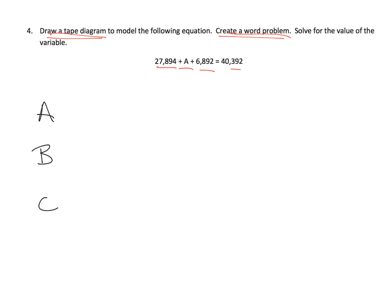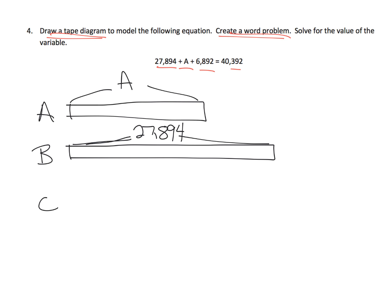So I'm going to label A, B, and C. And I'm going to say, we don't know how much is A. Oftentimes, I have always put a question mark here, but I'm going to use the letter A this time. And then I'm going to say B. Let's make B really long right here. And B is the 27,894 pounds. And C is the 6,892. And then the total right here is going to be 40,392.